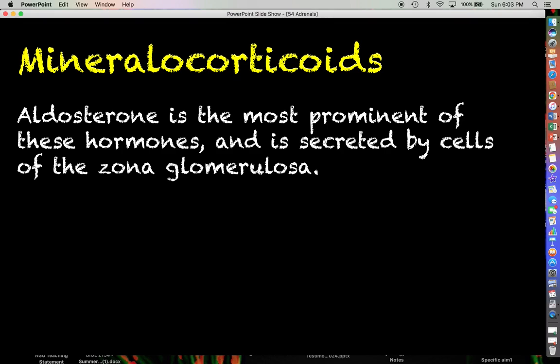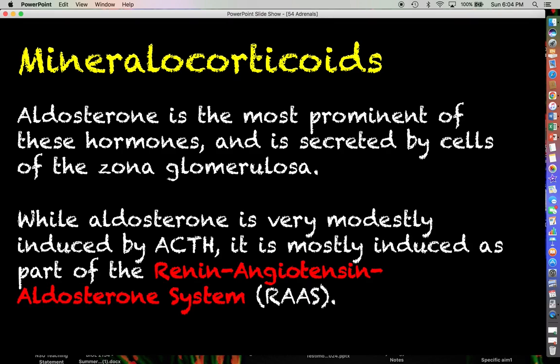And that's exactly what it's intended to mean. Aldosterone is the most prominent mineralocorticoid, secreted by the cells of the zona glomerulosa. What it does is something we're going to learn more about when we get into the chapter on the urinary system towards the end of the semester.